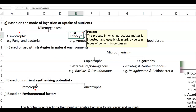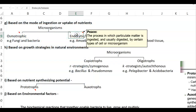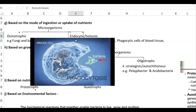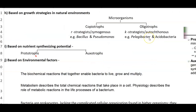The endocytic or holozoic mode of nutrition involves complete ingestion of particulate matter. A classic example is amoeba, which ingests particulate matter through contractile vacuoles. This holozoic or endocytic mode is common in most eukaryotes, and phagocytic cells in blood tissues are also involved in endocytic nutrition.